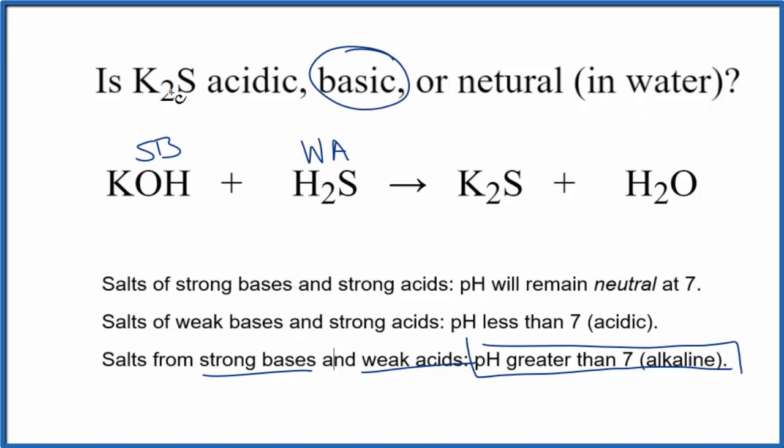So in answer to our question, K2S forms a basic or alkaline solution when it's dissolved in water with a pH greater than 7.